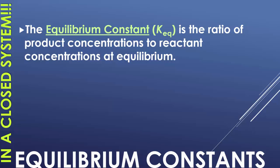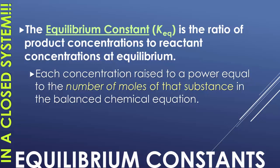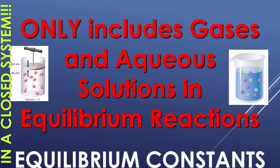The equilibrium constant, which is KEQ, and the K comes from the German word for constant, is the ratio of the product concentration to reactant concentrations. Each concentration is raised to the number of moles of that substance in the balanced chemical equation. This is really only going to affect gases or anything that is an aqueous solution, and only in a closed system.